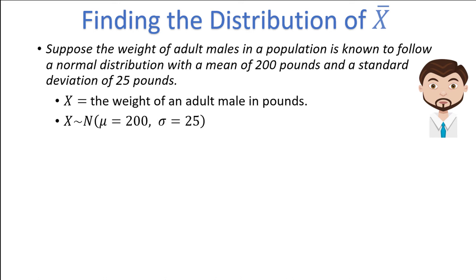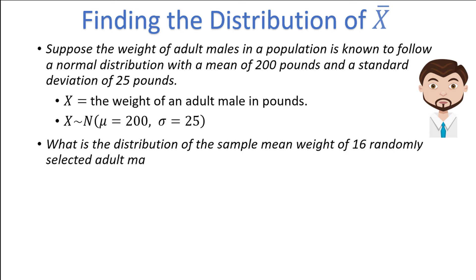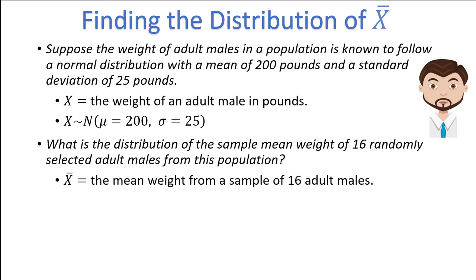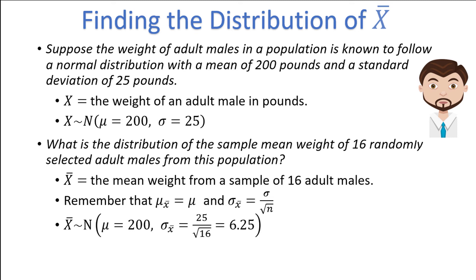Let's say a sample of 16 adult males is taken. What is the distribution of the sample mean weight of 16 randomly selected adult males from this population? If we let x-bar represent the mean weight from a sample of 16 adult males, and we remember that the mean of the sampling distribution is the same as the mean of the initial distribution, and the standard deviation of the sampling distribution is the standard deviation of the initial distribution divided by the square root of n, we know that x-bar is normally distributed with a mean of 200 and a standard deviation of 25 divided by the square root of 16, simplifying to 6.25.